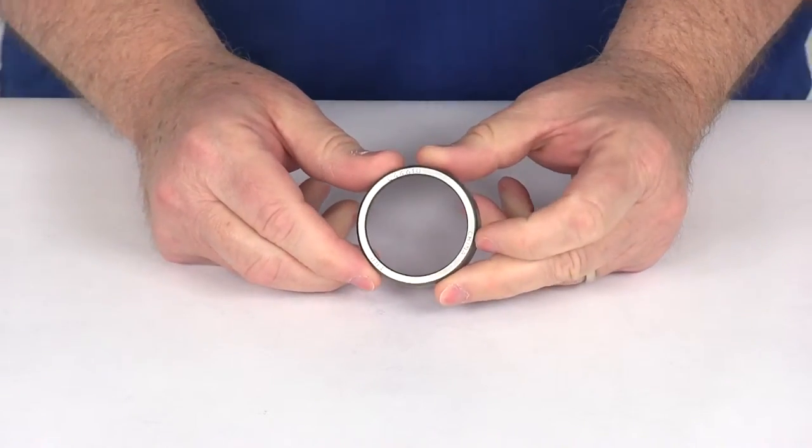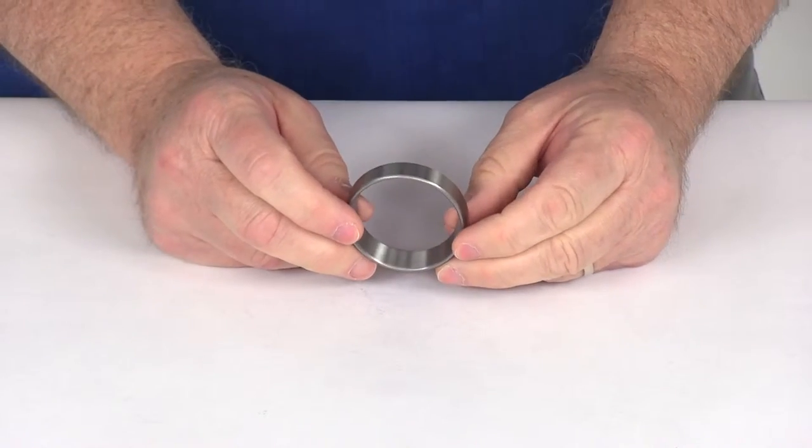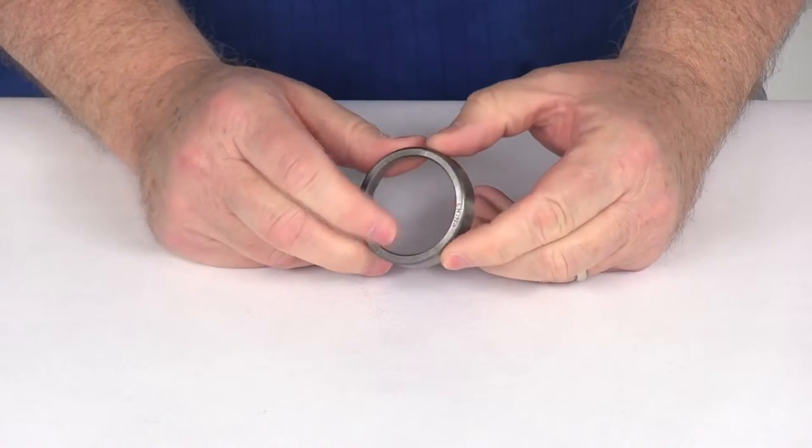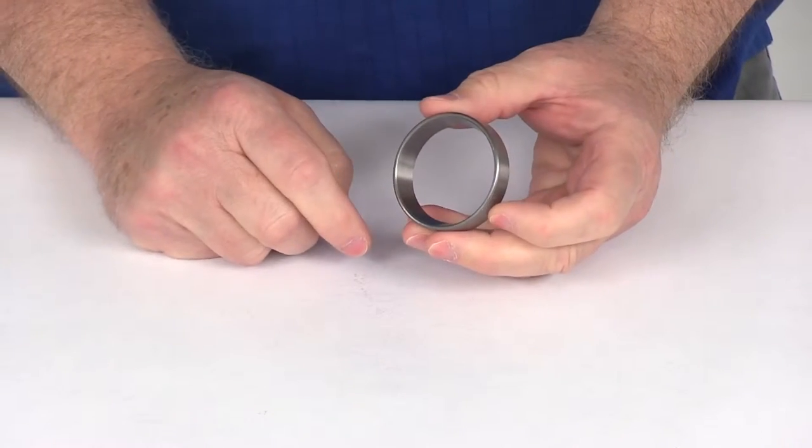Today we're going to take a look at the replacement bearing race for the L44643 bearing and the L44649 bearing. Now this race will provide the smooth surface for the bearing to roll on inside of your trailer hub.